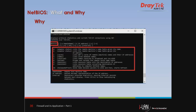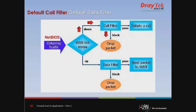That is why Draytek routers block NetBIOS by default. The following illustrations are flowcharts explaining how the router behaves for incoming and outgoing traffic. When there is no existing internet connection, the call filter is applied to all outgoing traffic. It checks packets according to the filter rules — if permitted, the packet will pass and the router will initiate a call to build the internet connection. In this example, we are using PPPoE protocol.